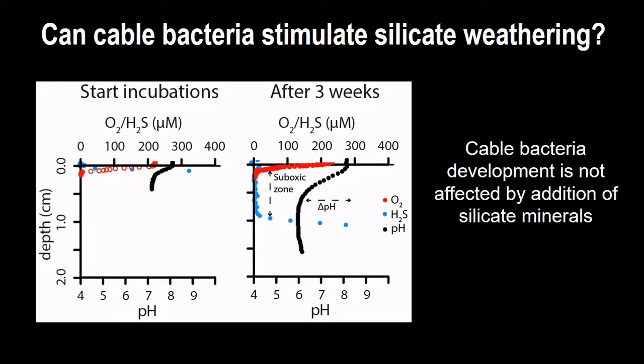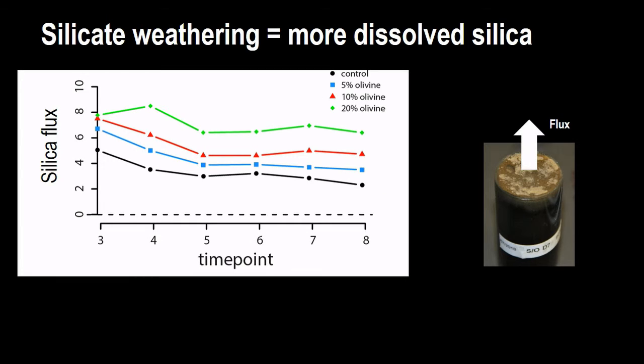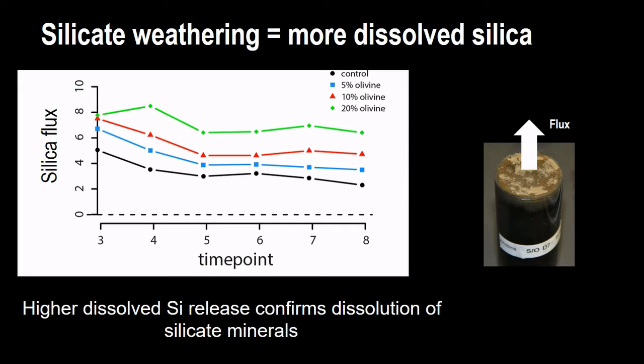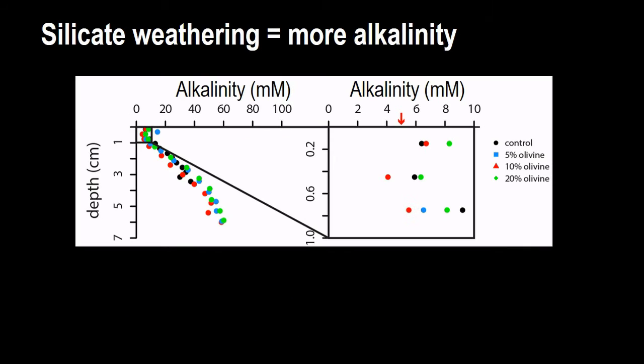Now, the question was whether this will increase the silicate weathering. You see that over time, the flux of the amount of silica that is removed from the sediment and accumulates in the overlying water is much higher in the green points, which is the treatment where we added more silicate, than in all the other colors. Clearly, the silicate is being dissolved in the sediment when the cable bacteria are active.